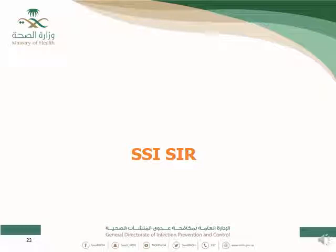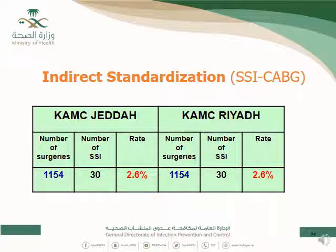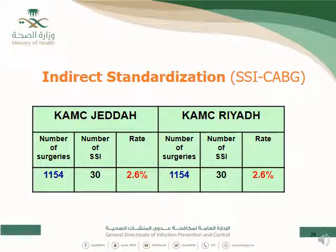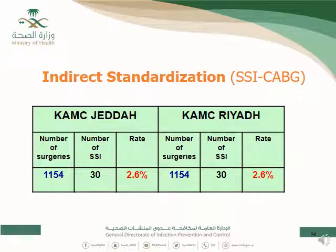Another example concerns SSI SIR. Assume two hospitals — one in Jeddah and one in Riyadh — performing the same surgery surveillance, both with 1,154 surgeries and 30 SSI events each. The crude rate for both is 2.6% (30 ÷ 1,154). Using crude data alone, both hospitals appear to have an equal SSI rate.